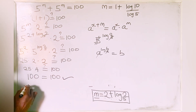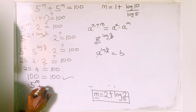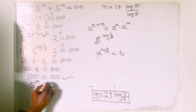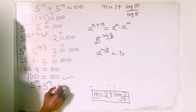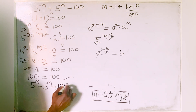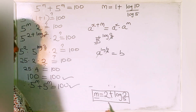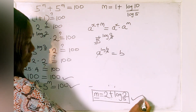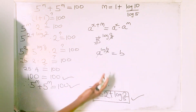Therefore, 5 raised to the power of m plus 5 raised to the power of m is equal to 100. Therefore this is our answer, and it means that we solved it correctly.